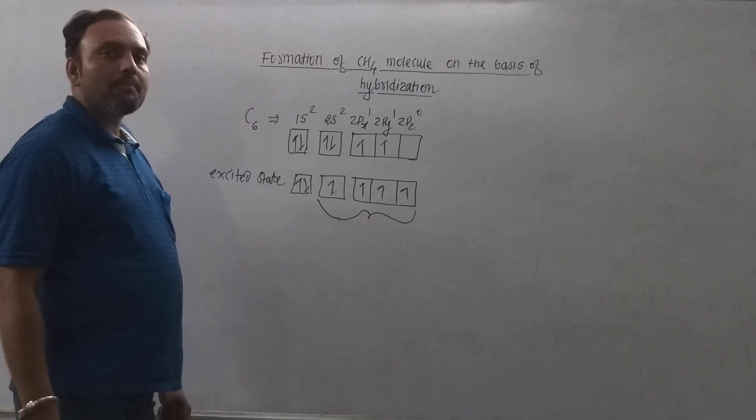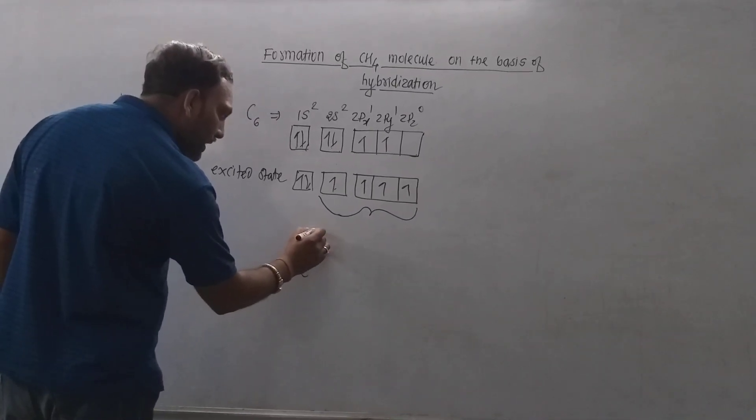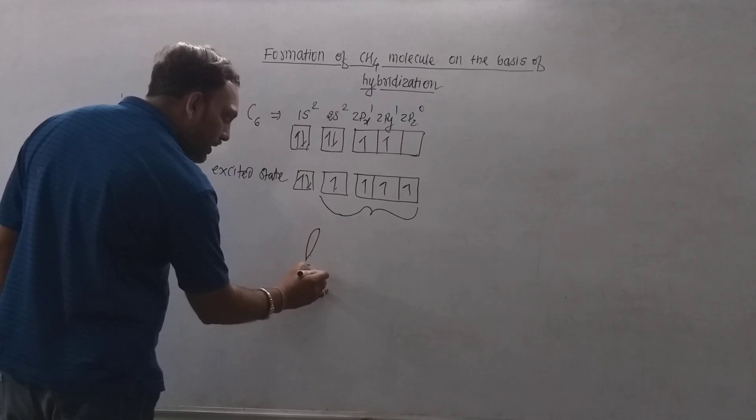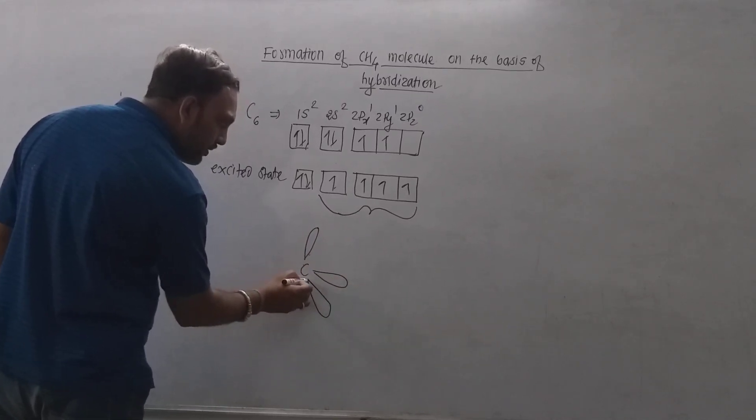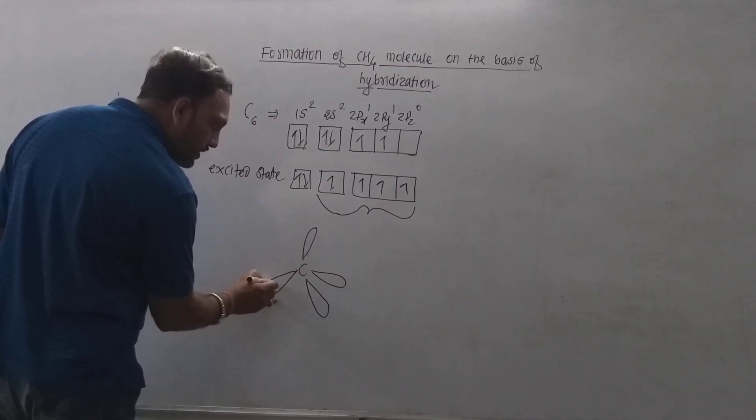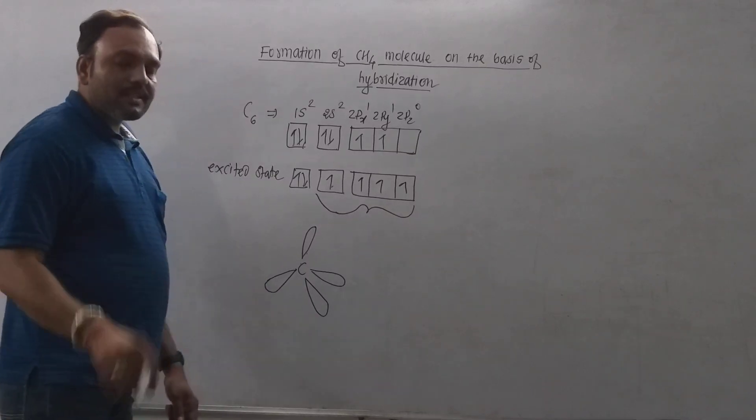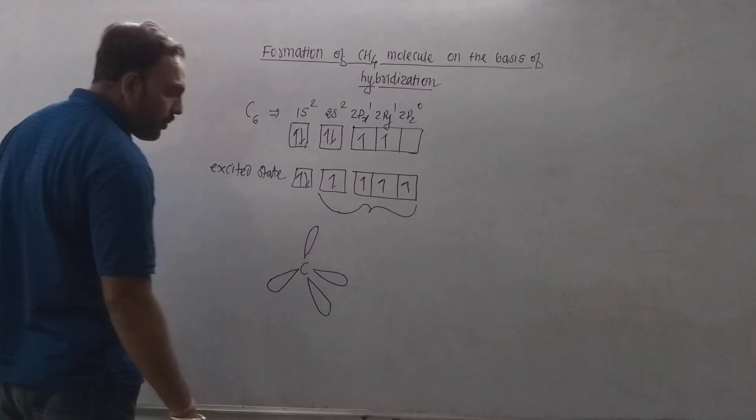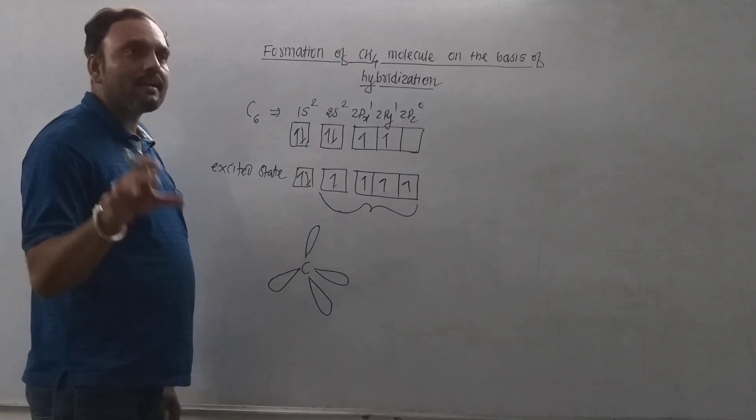Each containing unpaired electron are directed tetrahedrally around the carbon. Now all the 4 SP3 hybrid orbitals possess unpaired electrons, so these are able to undergo bond formation.